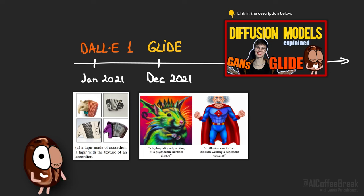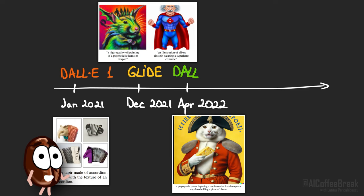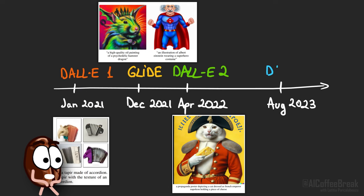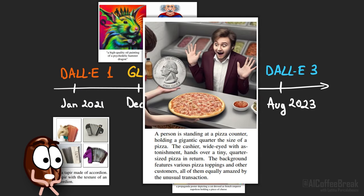December 2021, they switched to diffusion models with GLIDE, which generates an image from noise step-by-step. We have many previous videos about diffusion models if you want an explanation. Funnily, GLIDE was not yet named like an offspring from DALL-E 1, because they are architecturally so different. Then April 2022, OpenAI decided to go full into diffusion models and release DALL-E 2, a modified GLIDE model incorporating CLIP embeddings. And since August 2023, DALL-E 3 became available for researchers, and as of October for a wider audience through Bing Chat and ChatGPT Plus.